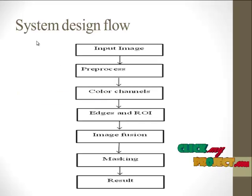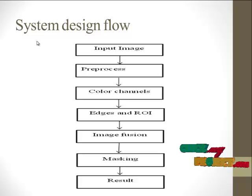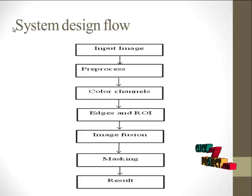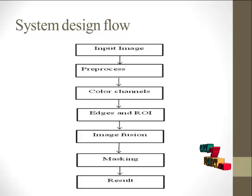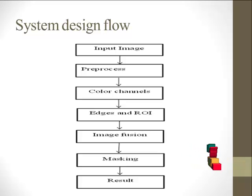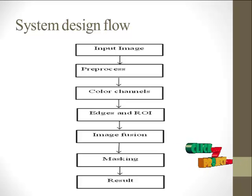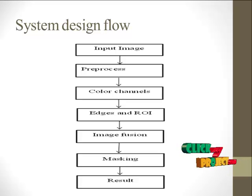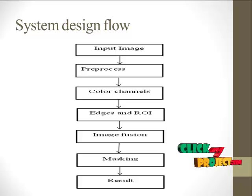This is the system flow of our design. Initially we have taken the input images — eye scanned images stored in our database. The taken images are preprocessed by noise removal using a filter, and the color channels are split into red, green, and blue because we have to process each channel. From the corresponding channels, we select particular channels and perform edge detection and ROI extraction on the different channels. They are fused with the images, and finally we mask that image with the original image. After masking the segmented and original images, we obtain the segmented identified result.